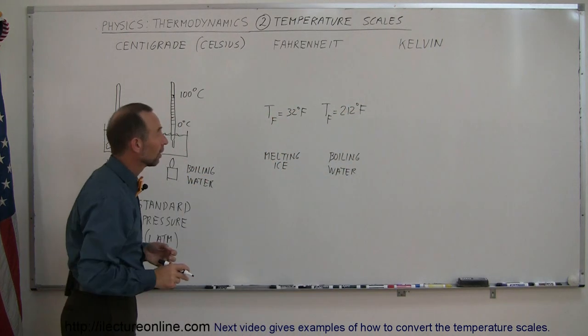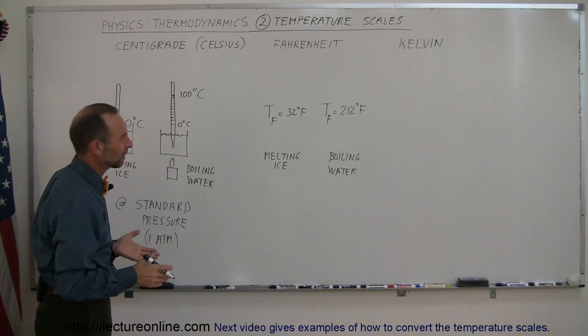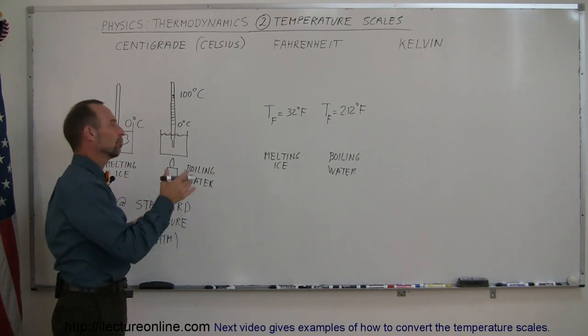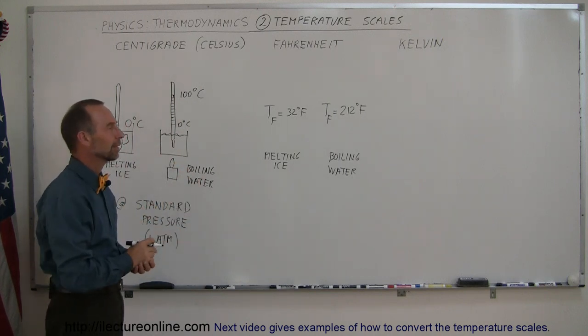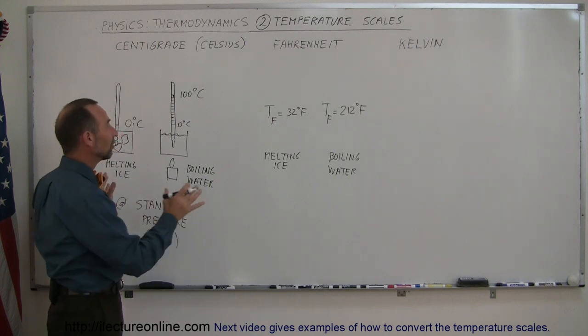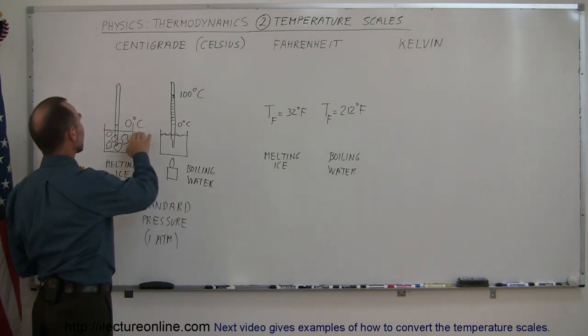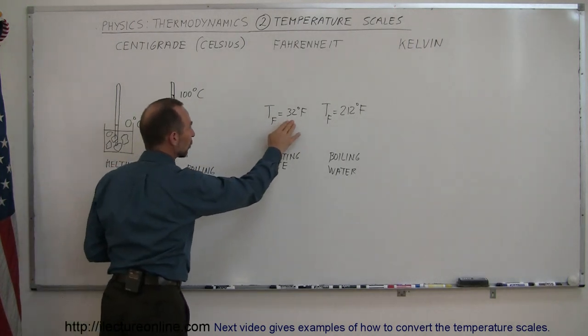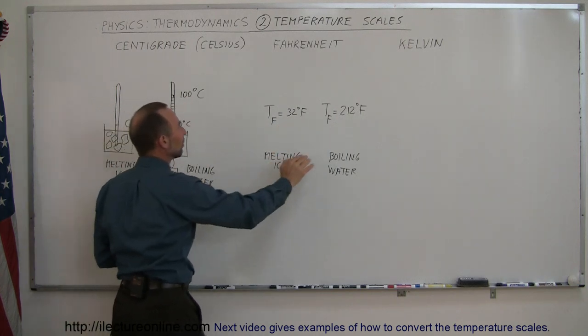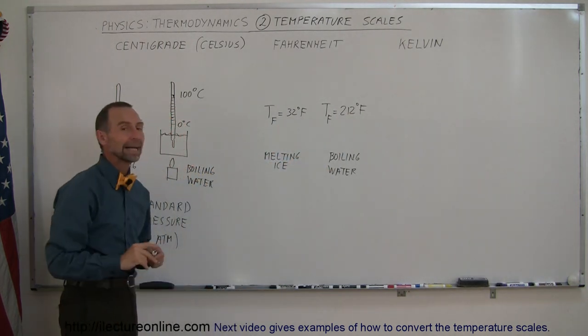Now notice that that's quite a bit different. You say, well that seems kind of hot, they obviously didn't use melting ice and boiling water to come up with that scale. But you can now see the relationship that zero degrees centigrade is the same as 32 degrees Fahrenheit, and 100 degrees centigrade is the same as 212 degrees Fahrenheit.